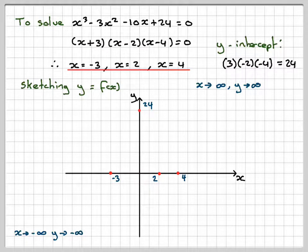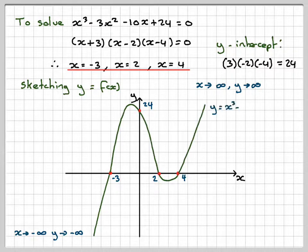So the graph starts here and ends here. There's no repeated root, so it must go through these points. The maximum must be slightly higher than 24. So my sketch will look something like that. It's only a sketch.